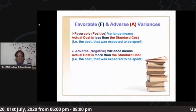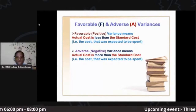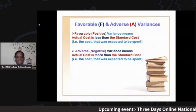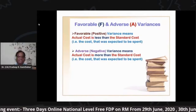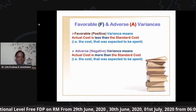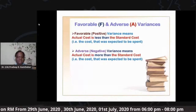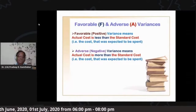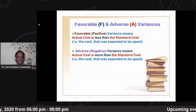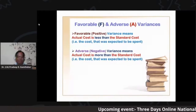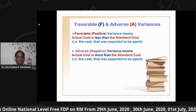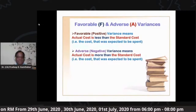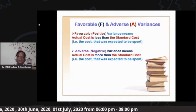In standard costing, whichever way you calculate the variances — that is called the difference — you will only have two possible answers if there is some difference. Standard costing is nothing but a comparison between the budgeted costs, which we call the standard cost — the cost which the business was expected to incur — with the actual cost which is already incurred by the business. When these two costs are compared, there could be a difference.